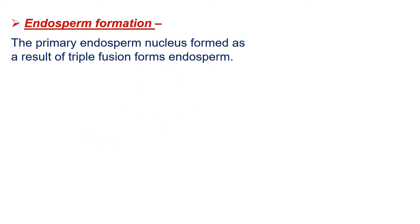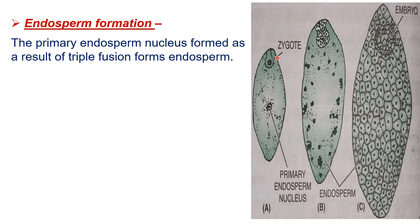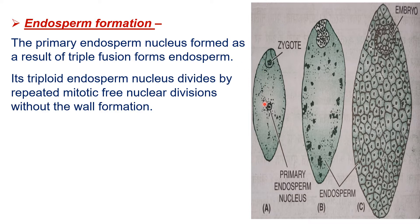In this, we will first read about endosperm formation. The primary endosperm nucleus, formed as a result of triple fusion, forms the endosperm. It provides nutrition to the developing embryo, as seen in diagram A.